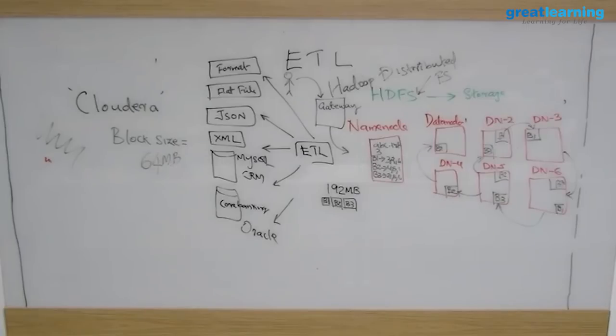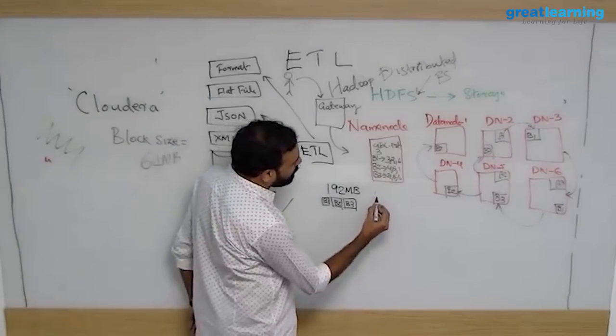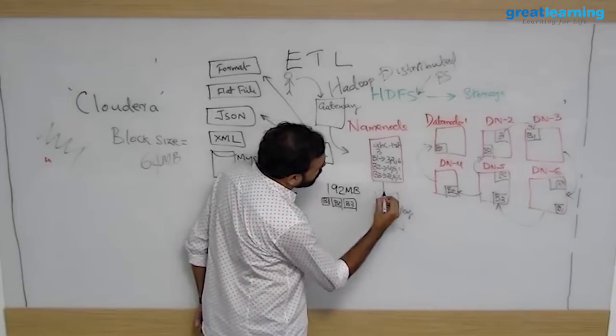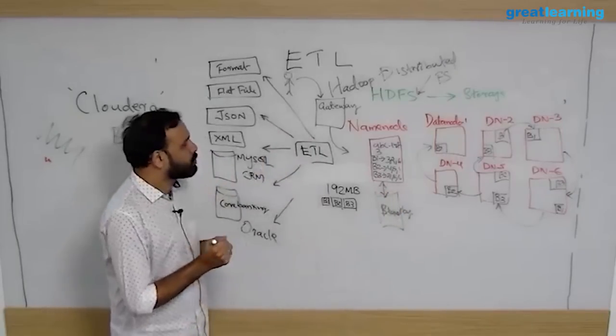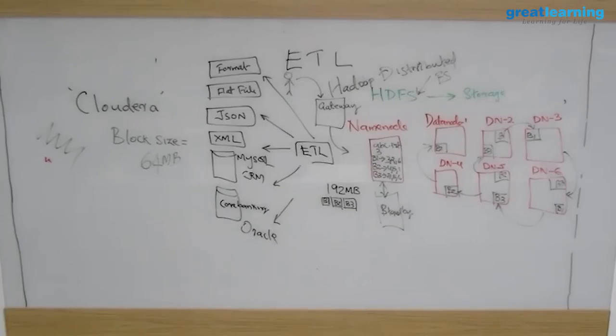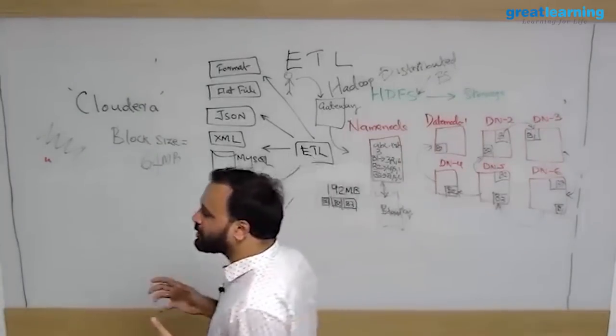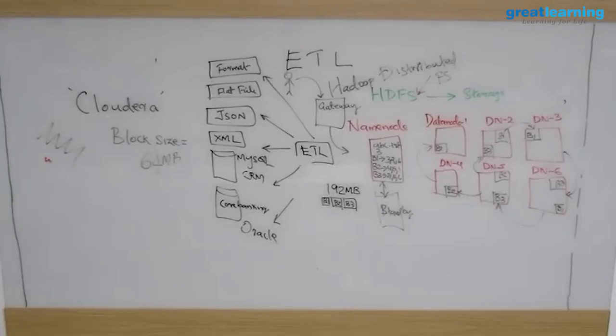If the name node crashes, you cannot access the cluster, that is for sure. Because if the name node is gone then everything will be gone. To prevent that, in most of the Hadoop clusters you will have an active name node and a standby name node. There will be two name nodes. These two guys will be in constant communication. So if the active name node crashes, there is disaster recovery to set up. There is a company called Van Disco, very interesting company. So Van Disco is one of the popular companies who set up disaster recovery for Hadoop.